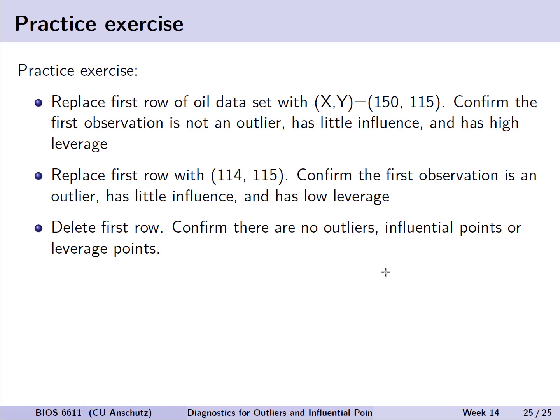So with that, this sort of wraps up our foray into outliers, influential points, and leverage points. For practice, you might want to play around with that data set of the 21 observations and replace the first row with the values of 150 and 115. Then confirm the first observation is not an outlier, now has little influence, but still has high leverage. Then try replacing the first row with 114 and 115. Confirm in this case that the first observation is an outlier, but has little influence and low leverage. Then try fitting the data with the first row removed completely and confirm that overall there's no outliers, influential points, or leverage points. These practice exercises can show you that just minor changes in single points can lead to big changes in how we might interpret an observation and what to do with it moving forward.